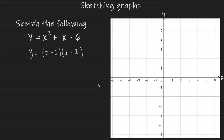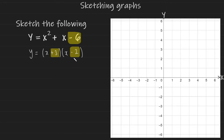Once you factorize the quadratic you can begin highlighting important values in your equation. The first important value is the constant minus 6 — this is where your graph is going to cut the y-axis. The next two important points are the +3 and the -2. These values are the roots of your graph and they are where the graph will cut the x-axis.